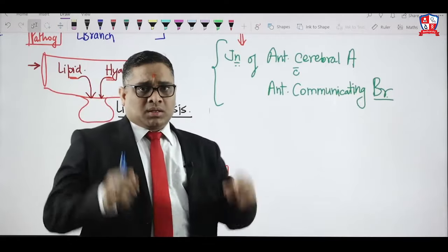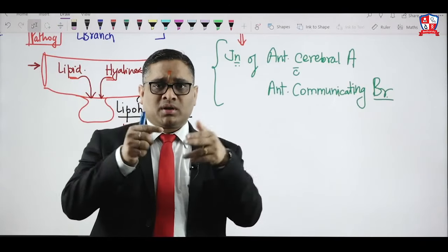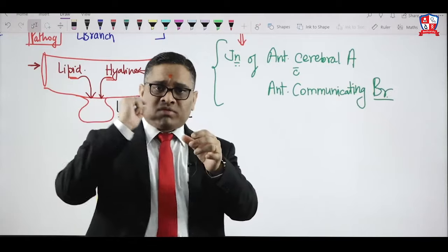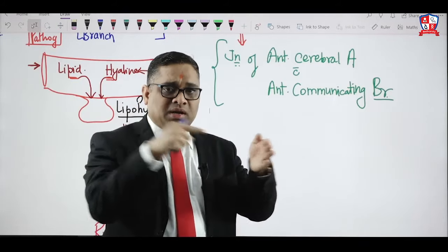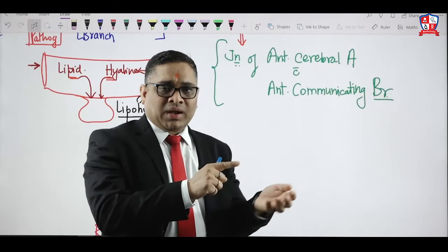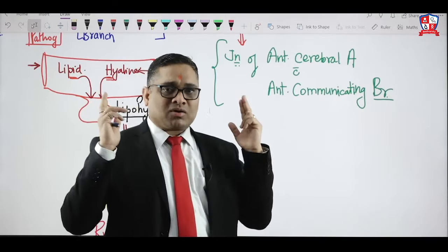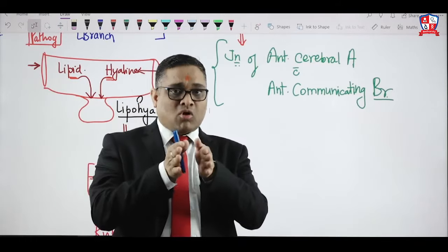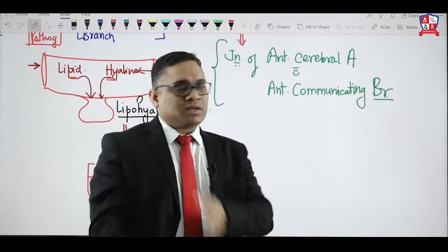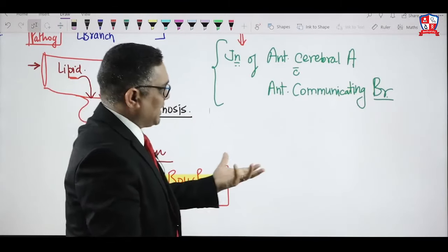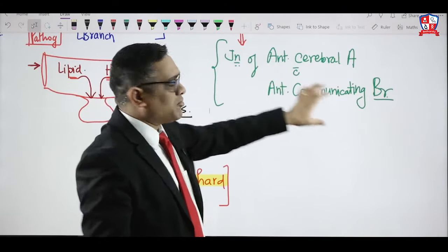At the junction of the anterior cerebral artery and anterior communicating branches, the lumen is narrow so blood flow is faster. When fast blood impacts this junction where tunica media is deficient, it causes damage and aneurysm formation. Simple physics: smaller lumen means faster blood flow, causing more damage. This was an All India question — most common site for berry's aneurysm is the junction of anterior cerebral artery with anterior communicating branches.